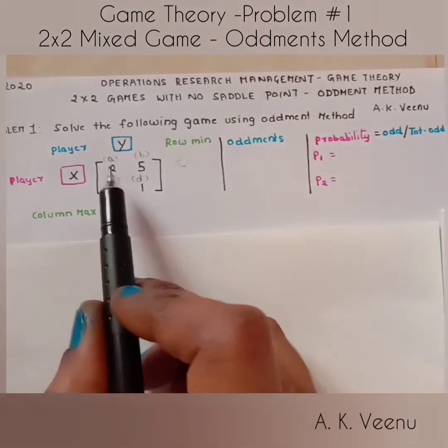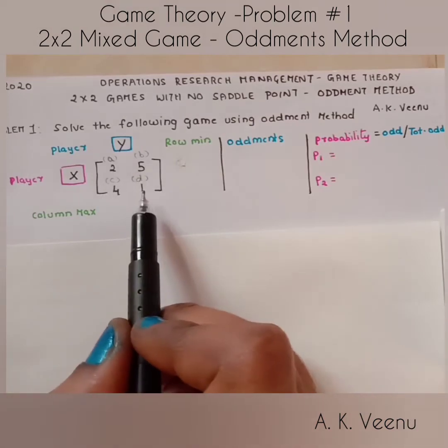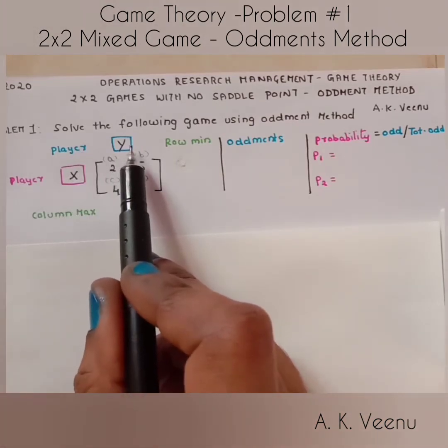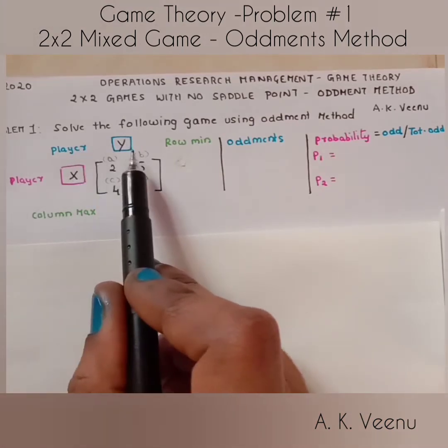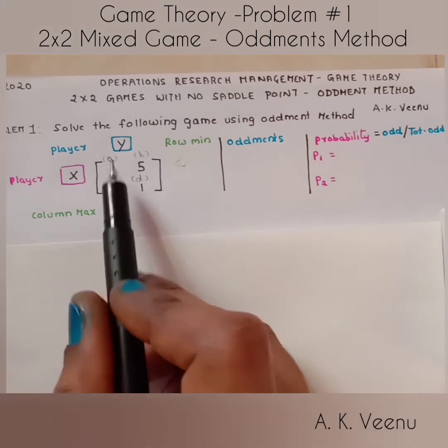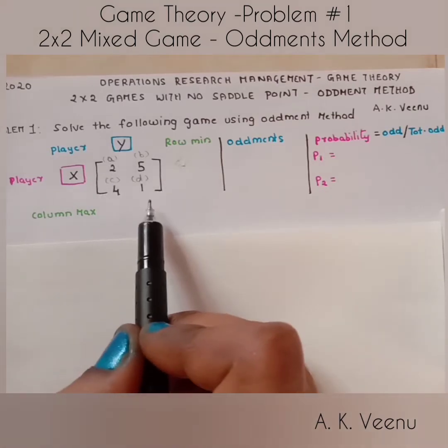Here we have a 2x2 matrix of player X and player Y strategies with two rows and two columns respectively.